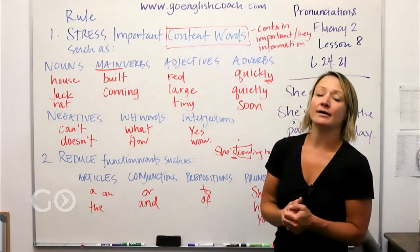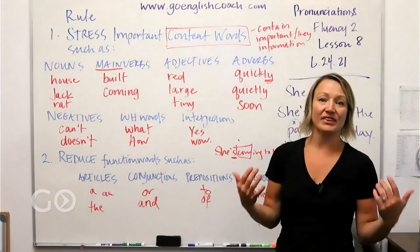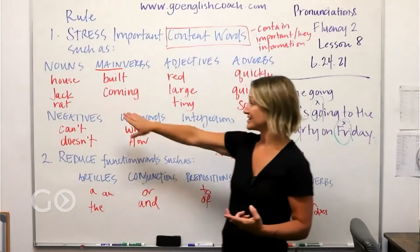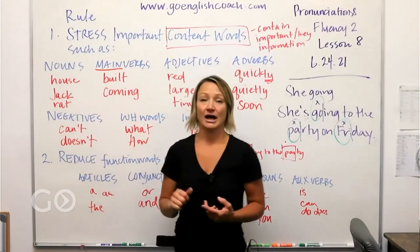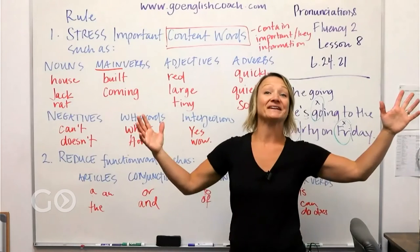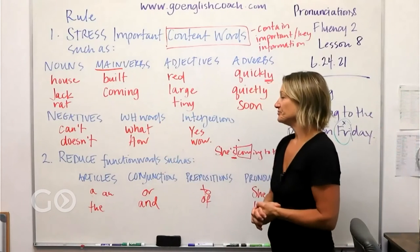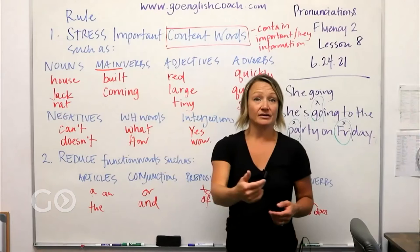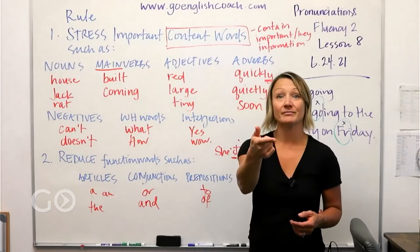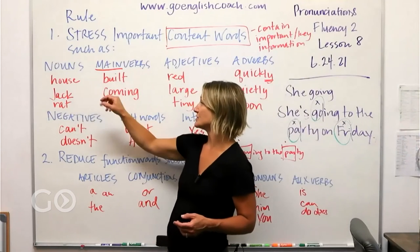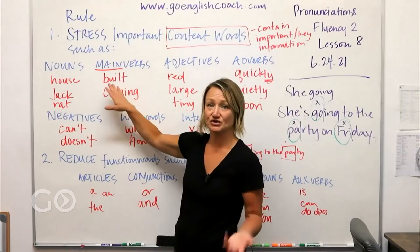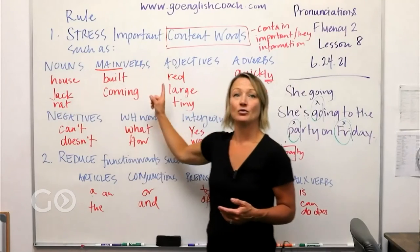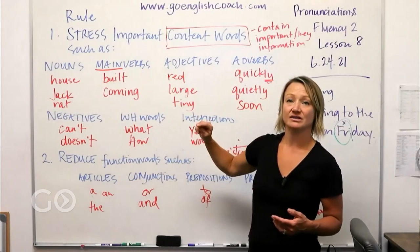We stress words that you really can't have the sentence without. We stress nouns — a house, a person's name, an animal, a thing. Happiness is a noun. We also stress main verbs. In the nursery rhyme we did yesterday, we had the words jack, house, built. It doesn't matter what tense — we stress main verbs. We stress adjectives, words that describe nouns: a red house, a large house, a tiny house, a red shoe.